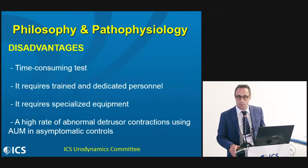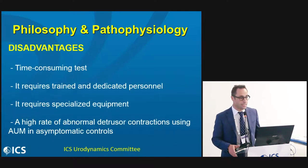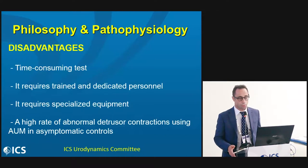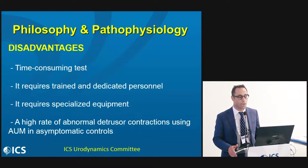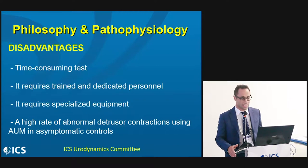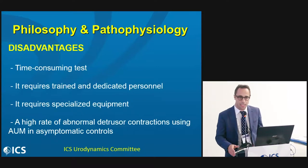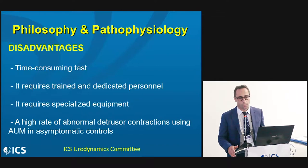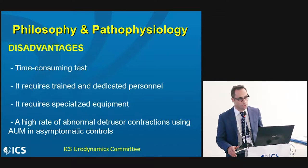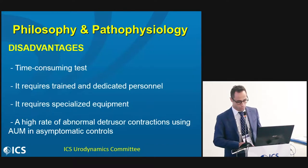The disadvantages are that it is a time-consuming test, which requires trained and dedicated personnel. It also requires specialized equipment. A further drawback of AUM is that it has been reported to have a high rate of abnormal detrusor contractions when AUM is performed in asymptomatic controls.